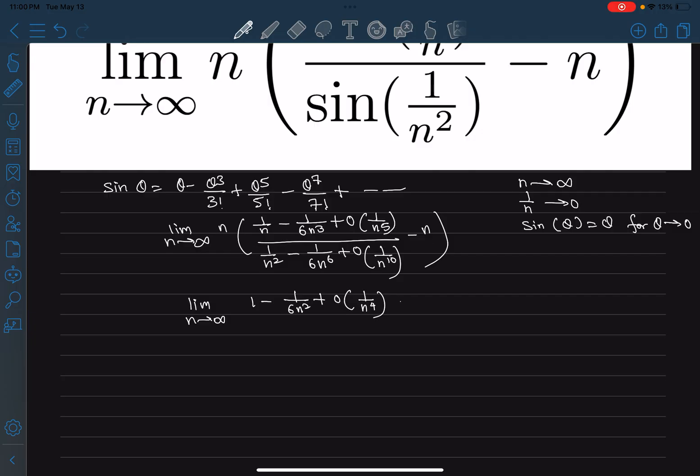Now if I try to merge, I mean if I try to add this term with the fraction, so I will get minus 1 plus 1 by n to the power 4, and then order of 1 by n to the power 8th, whole over 1 by n square minus 1 by 6 n to the power 6 plus order of 1 by n to the power 10th.